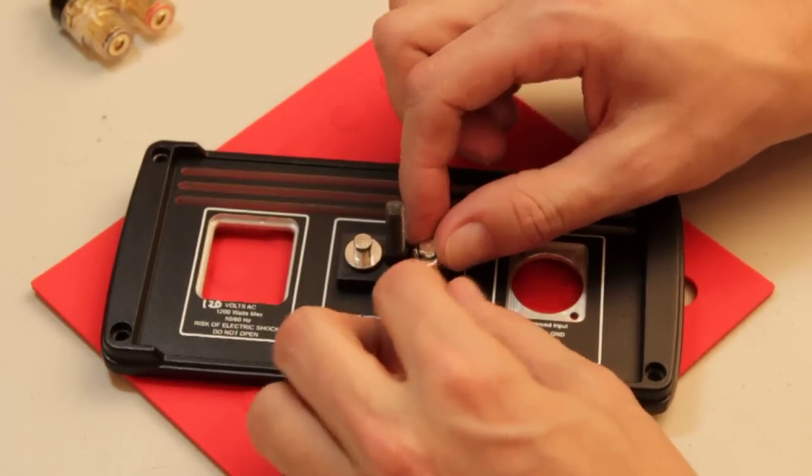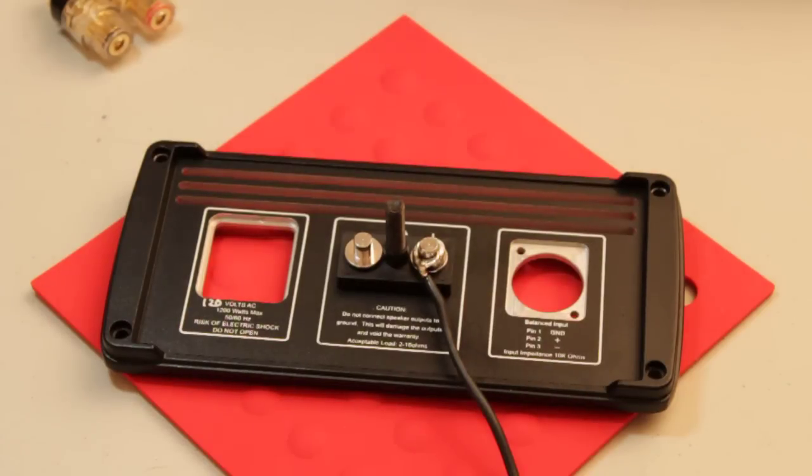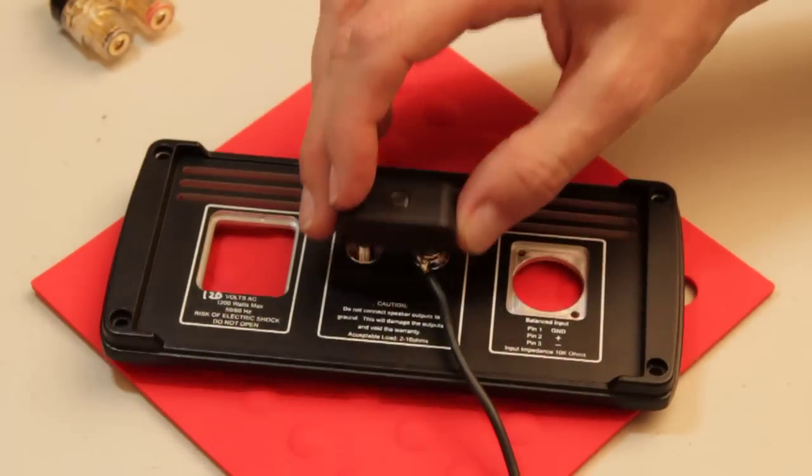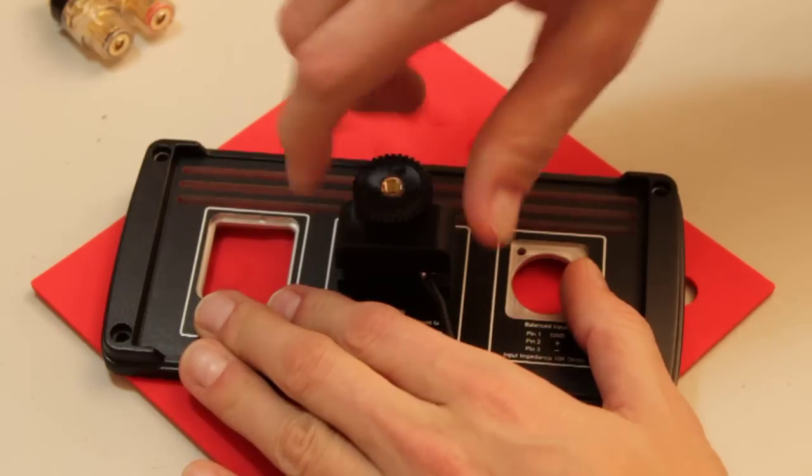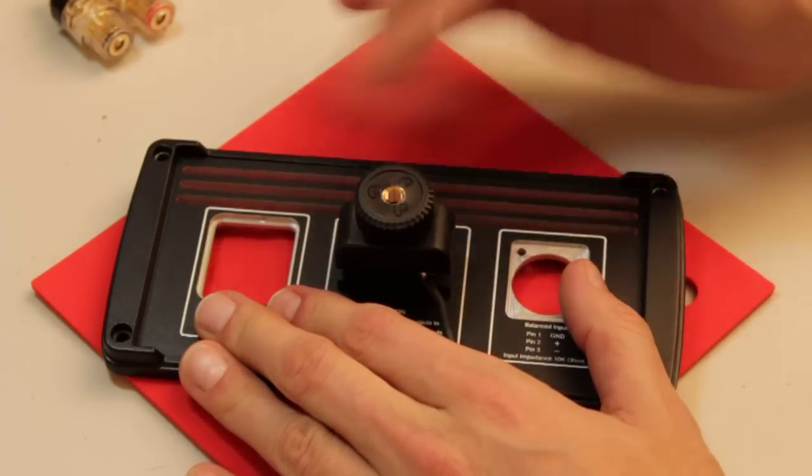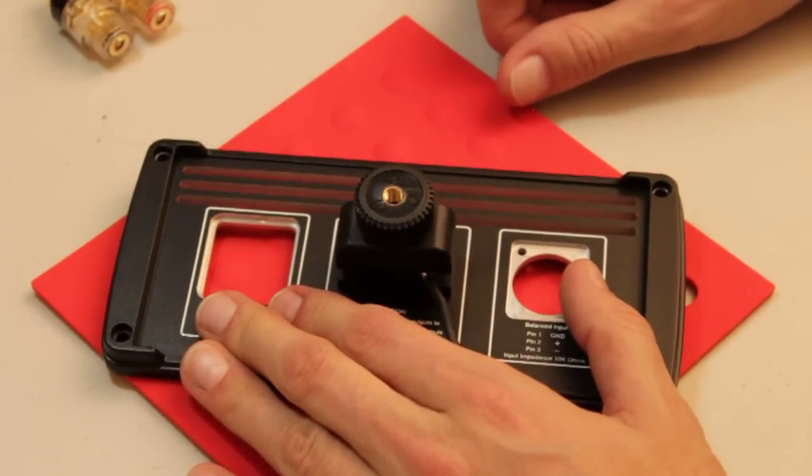Place that back on the binding post. Ta-da! Easy. Put your collar back on. And a tightening nut. Tighten that down. And you've got a very solid connection.